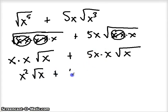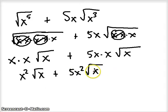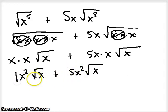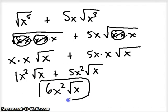Now I have the same index and the same radicand — square root of x — in both terms. So I can combine the coefficients as like terms. I really have one x squared plus five x squared, which gives six x squared. My final answer is six x squared times the square root of x.